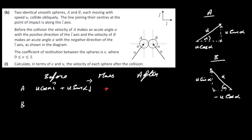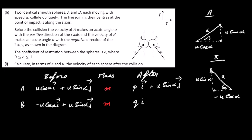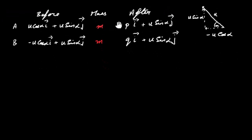Both spheres have mass M since they're identical. Sphere B has velocity -U cos(α) i + U sin(α) j before impact. After the collision, the velocity only changes in the i-direction (smooth spheres), so let A's post-collision velocity be P i + U sin(α) j and B's be Q i + U sin(α) j.